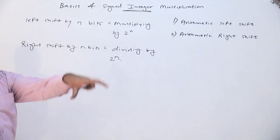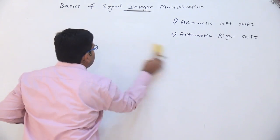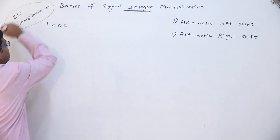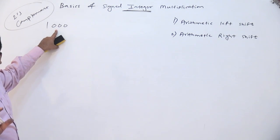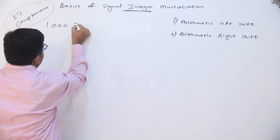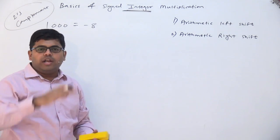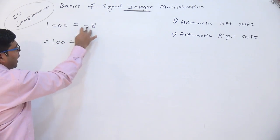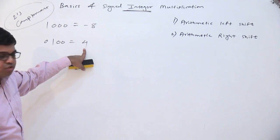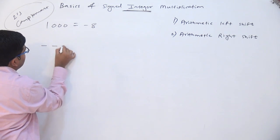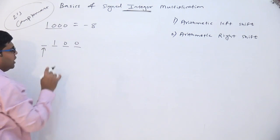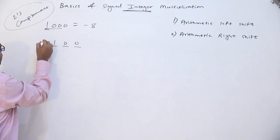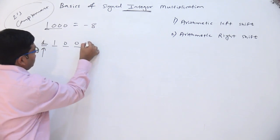However, we want to extend this concept further in case of signed numbers. Suppose you have the number 1 0 0 0 in 2's complement representation. This number means minus 8. If I right shift by 1 bit it becomes 0 1 0 0 which equals 4, but minus 8 divided by 2 is not equal to 4 — it should be minus 4. So instead of copying 0, you apply the concept of sign extension: whatever the original sign bit was, it should be copied into the vacated position. The original sign bit is 1, so it is copied and 1 1 0 0 comes out equal to minus 4.